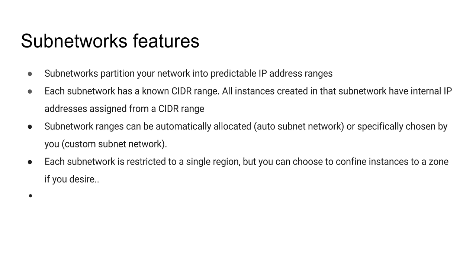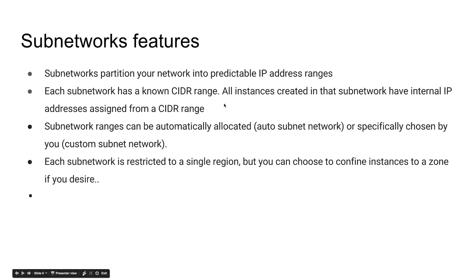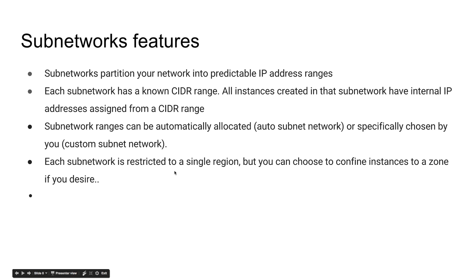Predictable IP ranges mean you're no longer confused when given an address — you know which region, zone, and subnet it belongs to. There are two ways to allocate a subnetwork range: one is by creating an automatic or auto subnet network, or you can create a custom subnet network. I'm going to go through a demo using a custom one, though it would be simpler to use the auto subnetwork. One constraint is each subnetwork is restricted to a single region, but a subnetwork can span multiple zones within that single region.